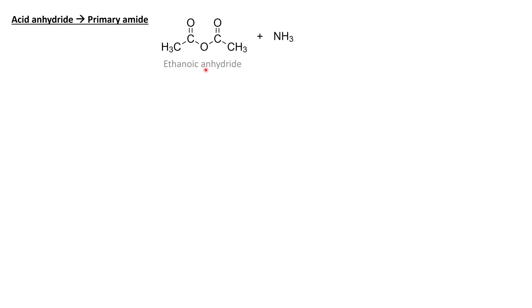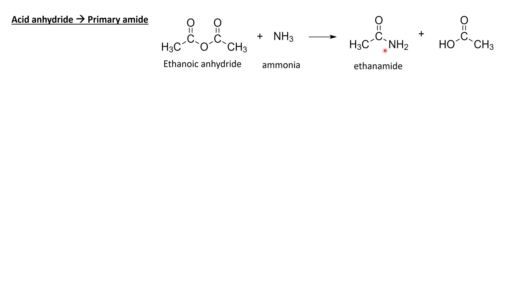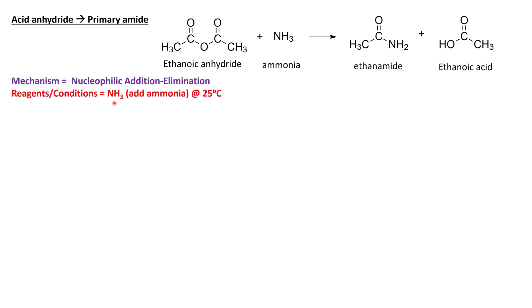Following the trend of treating acid anhydrides much like acyl chlorides, we're also going to make a primary amide. Starting with ethanoic anhydride and reacting with ammonia, this will produce ethanamide. Remember that one half of the anhydride acts to create the byproduct, so we're going to get ethanoic acid as a byproduct here. The mechanism is nucleophilic addition elimination, and all we need to do is add ammonia — the reaction occurs at room temperature.